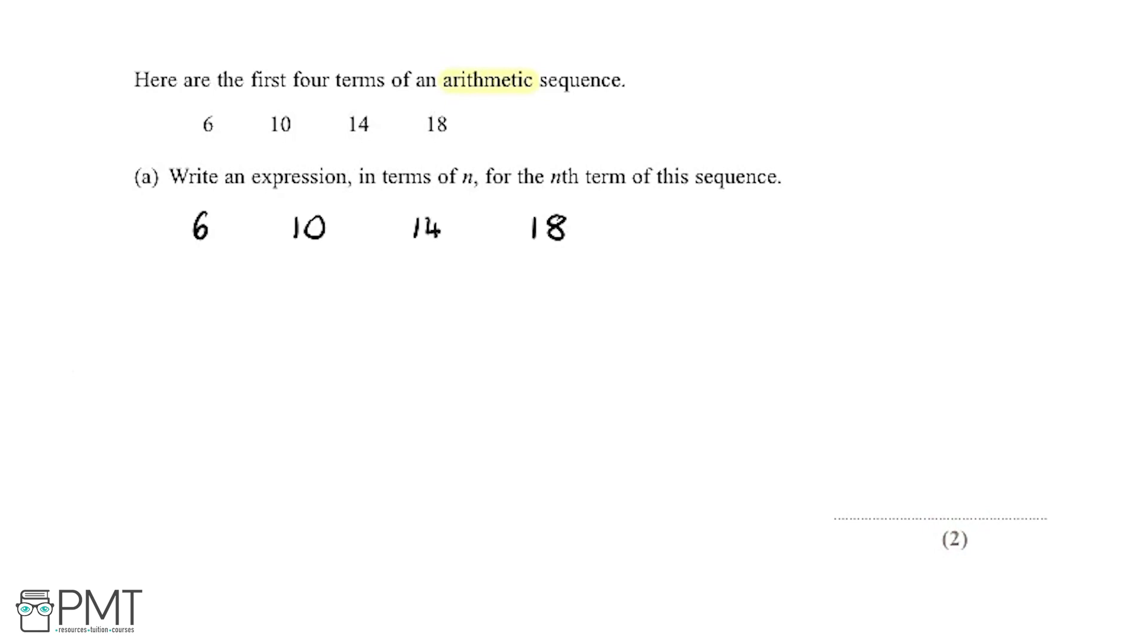The first step is to work out the difference between these terms. Between these two terms, the difference between 6 and 10, so that's 10 minus 6, gives us 4. Looking between these two terms, the difference again is 4, and between these two terms, the difference again is 4. So that's great. Now we've identified this number here, this is our key number we're going to be using in the next step.